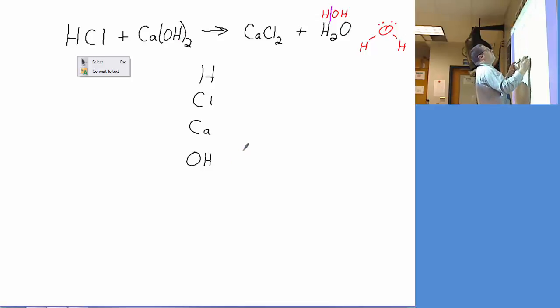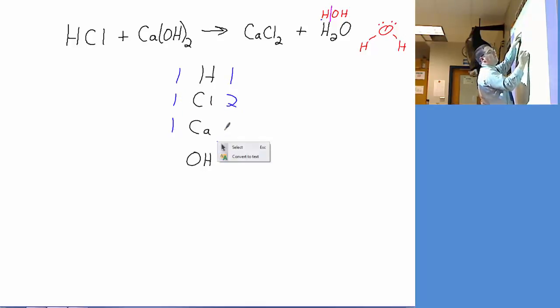So taking our inventory: one hydrogen on the left, only one - make sure you're using the HOH formula - only one freestanding hydrogen on the right. Chlorines, one on the left, two on the right. One calcium on the left, one on the right. Hydroxides, we've got two on the left and only one on the right.